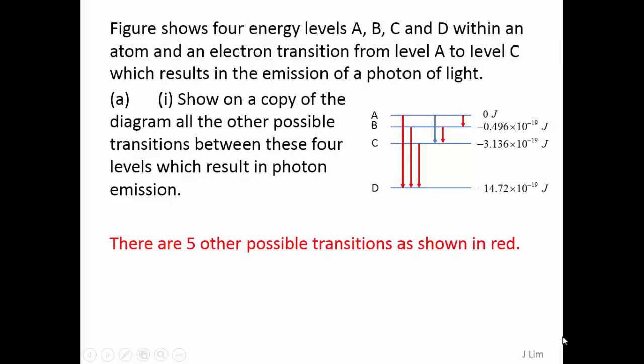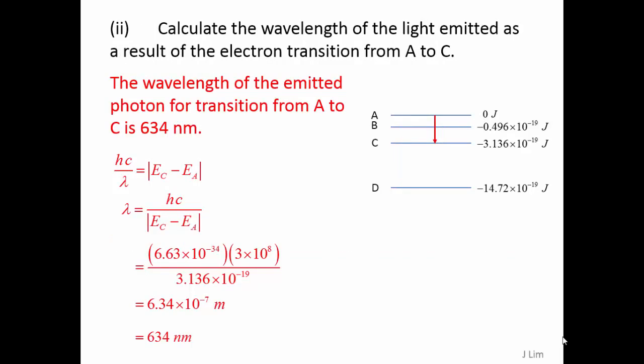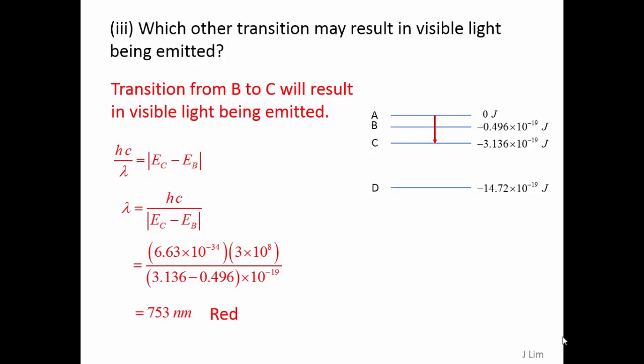There are 5 other possible transitions as shown in red. The wavelength of the emitted photon for transition from A to C is 634 nanometers. Transition from B to C will result in visible light being emitted.